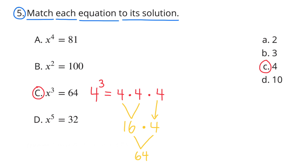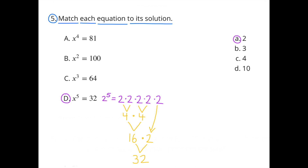X to the third power equals 64. I selected C, or 4. 4 to the third power equals 4 times 4 times 4, which is the same as 16 times 4, or 64. For X to the fifth power equals 32, 2 to the fifth power equals 2 times 2 times 2 times 2 times 2, which is 4 times 4 times 2, or 16 times 2, which is 32.